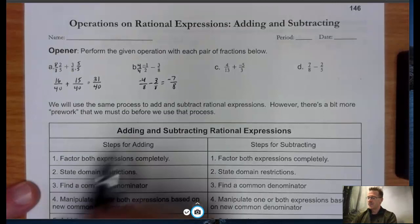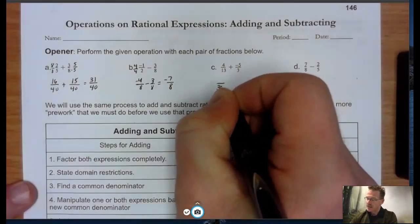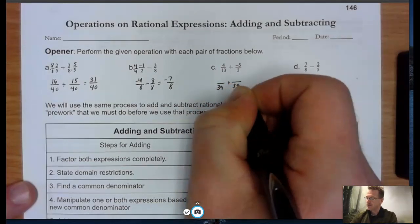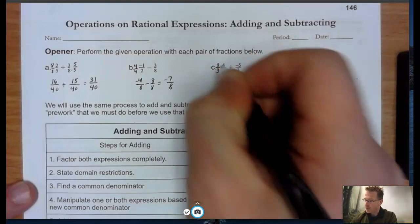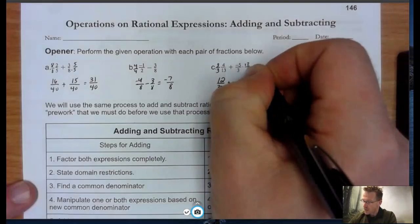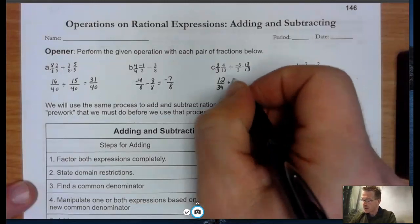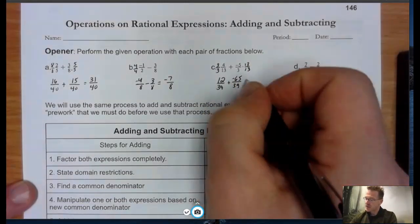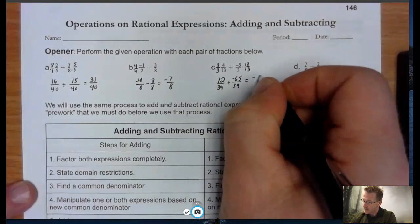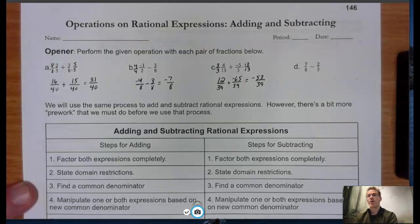For part C with denominators 13 and 3, the least common denominator is 39. I multiply the left by 3/3, giving 12 over 39, and multiply the right by 13/13 — negative 5 times 13 is negative 65 over 39. Adding those together gives negative 53 over 39. It's fine to leave it as an improper fraction; we can't reduce since there's no common factor in the numerator and denominator.